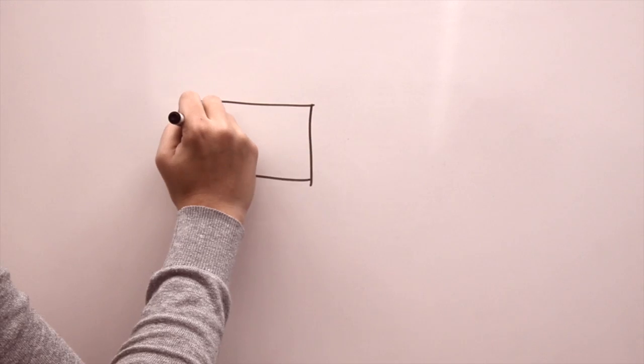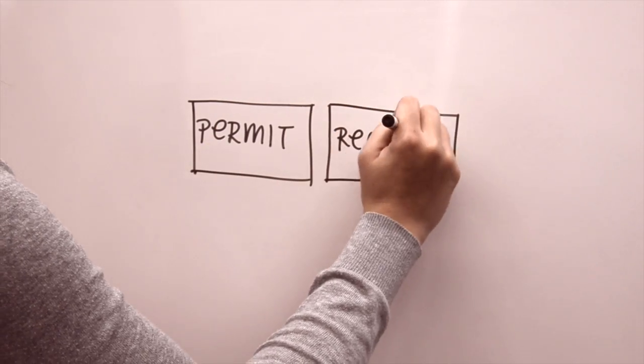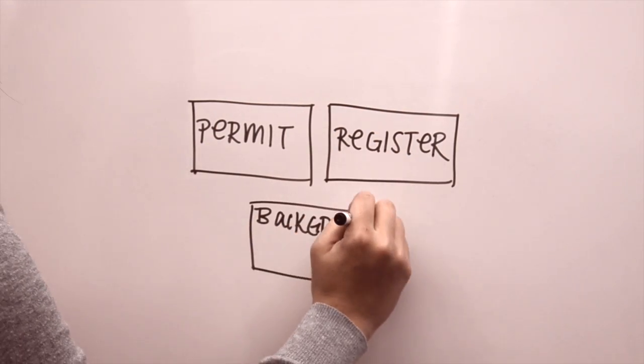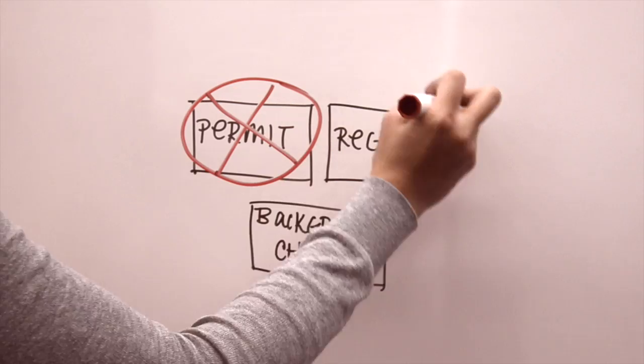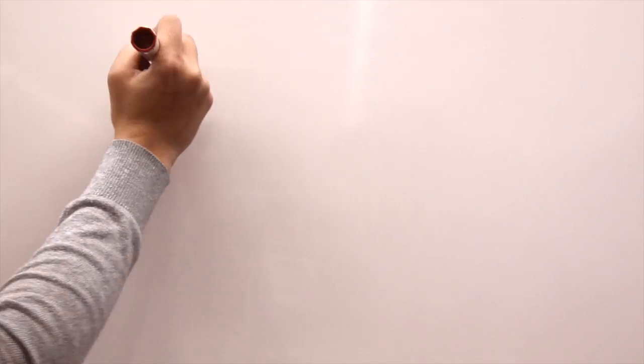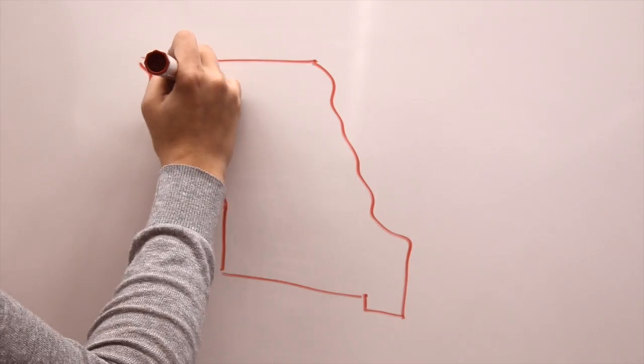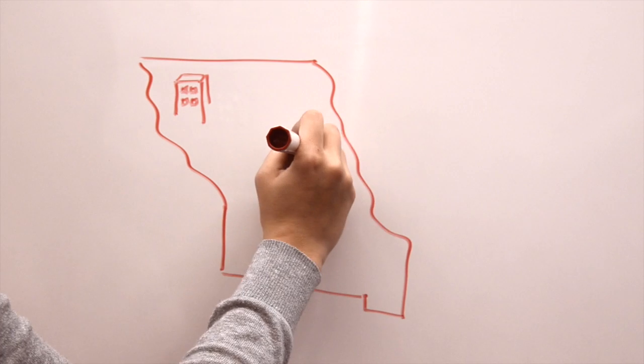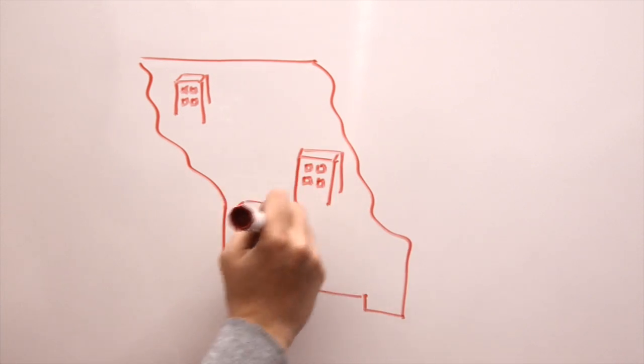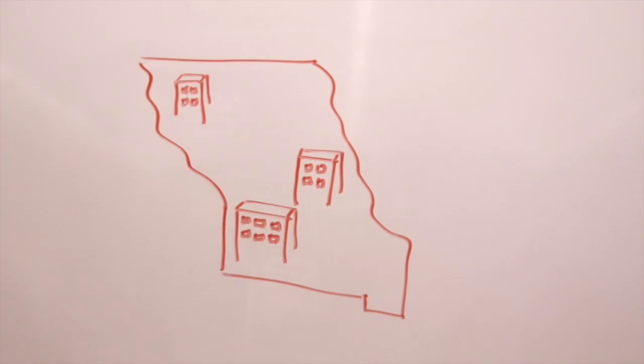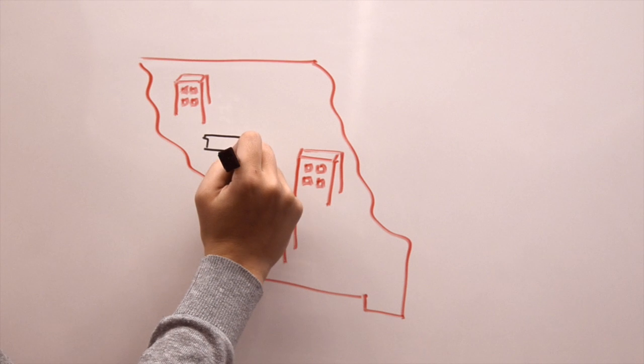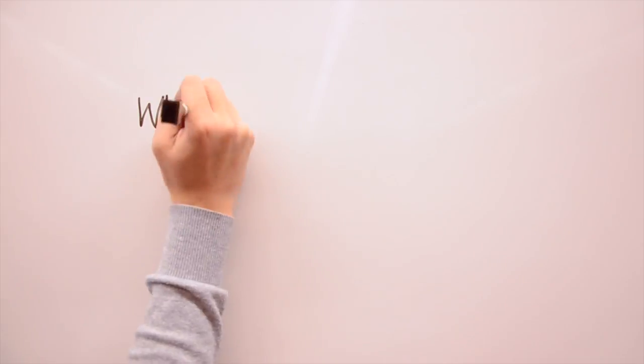You do not need a permit to purchase a rifle, handgun, or long gun, and you do not need to register it upon purchase. The only people who may not purchase guns are felons, habitual drug users, fugitives, and the mentally infirm. However, because background checks are not required to purchase all guns from all locations, these people are still capable of owning firearms.